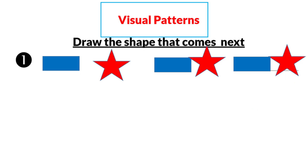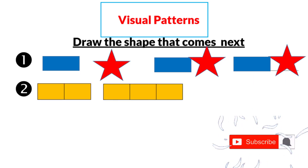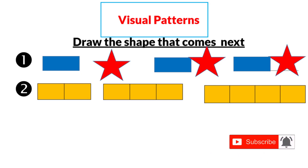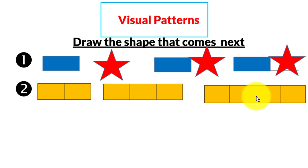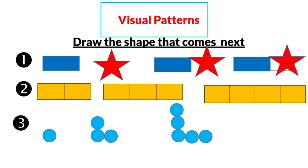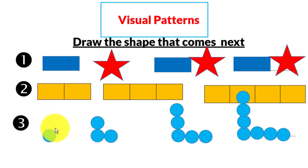Number two: two rectangles, three rectangles — now we have four rectangles, so it increases by one rectangle each time. Number three: one circle, three circles, five circles — so we have seven circles next. One, three, five, seven — increased by two each time.